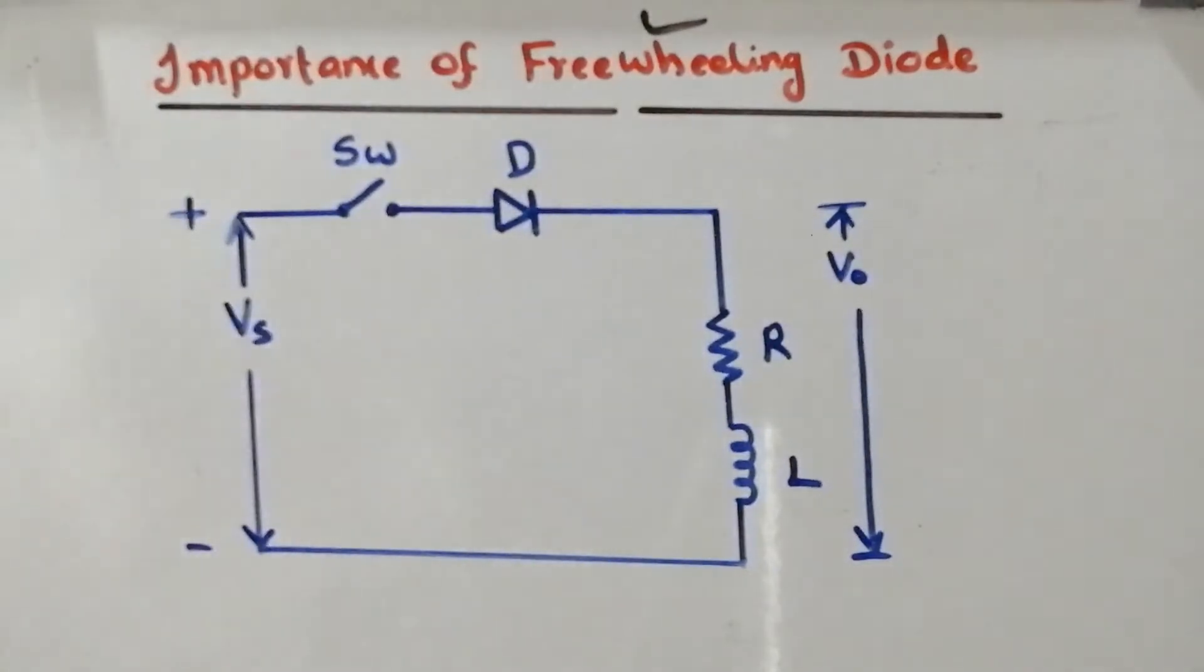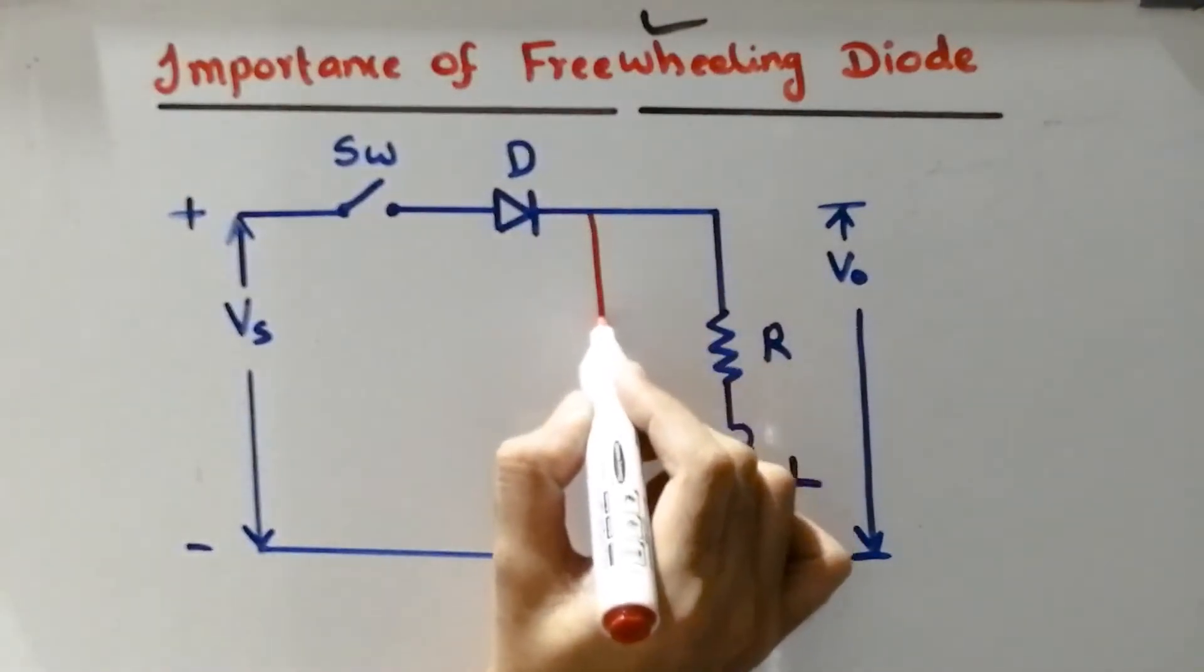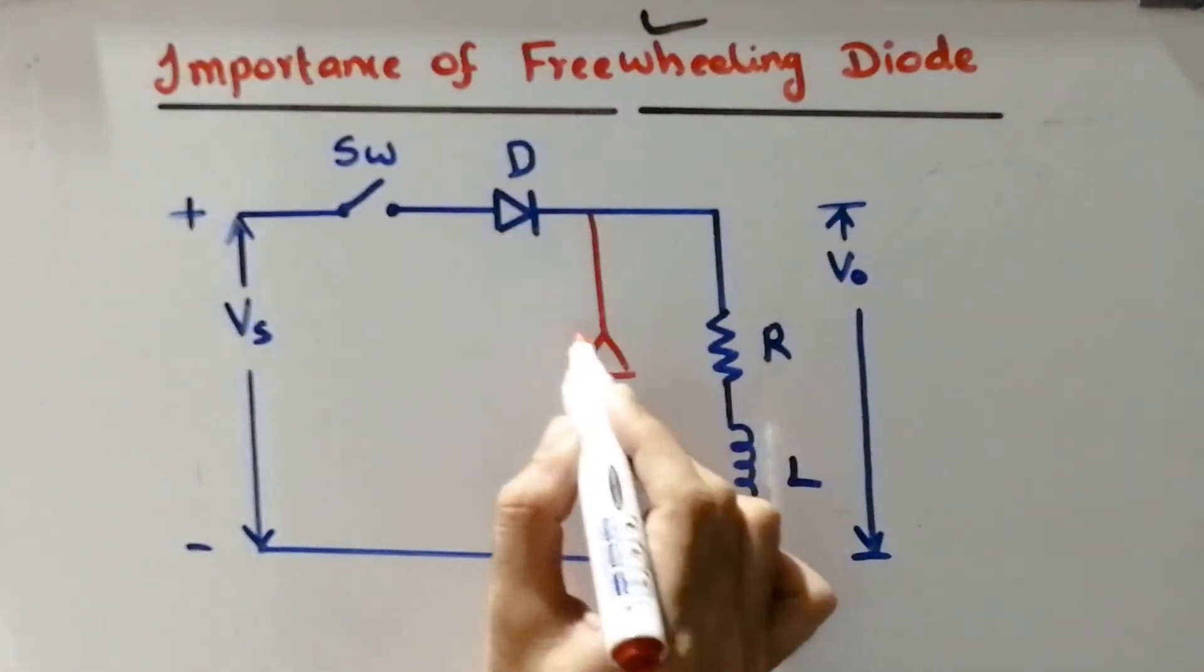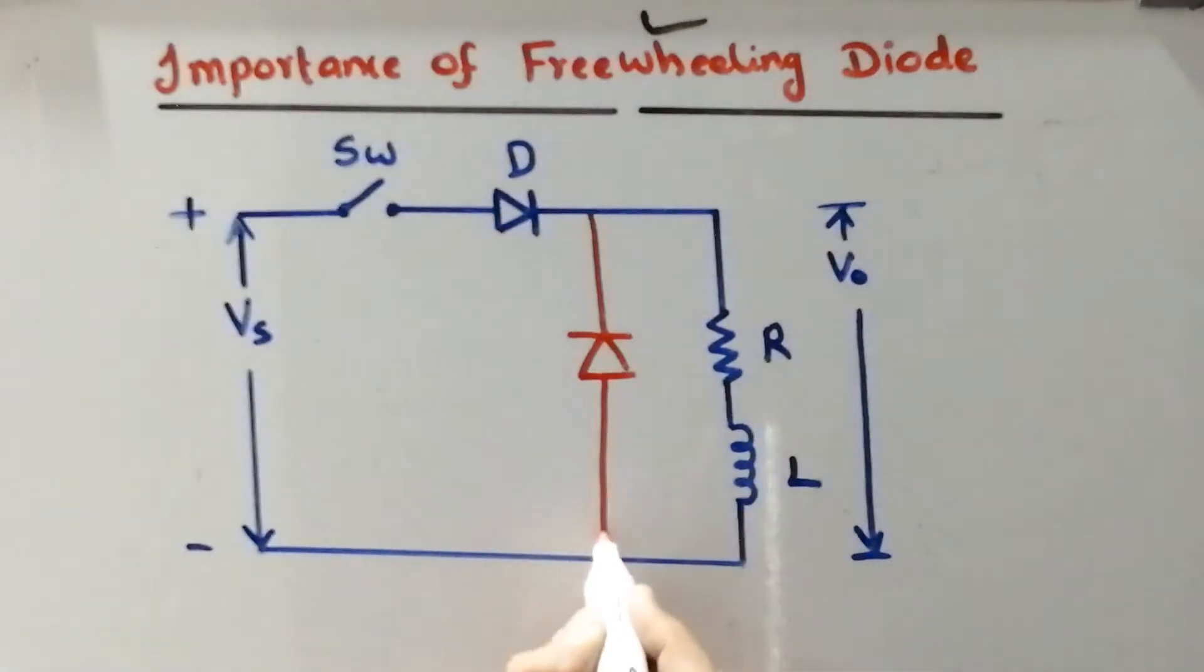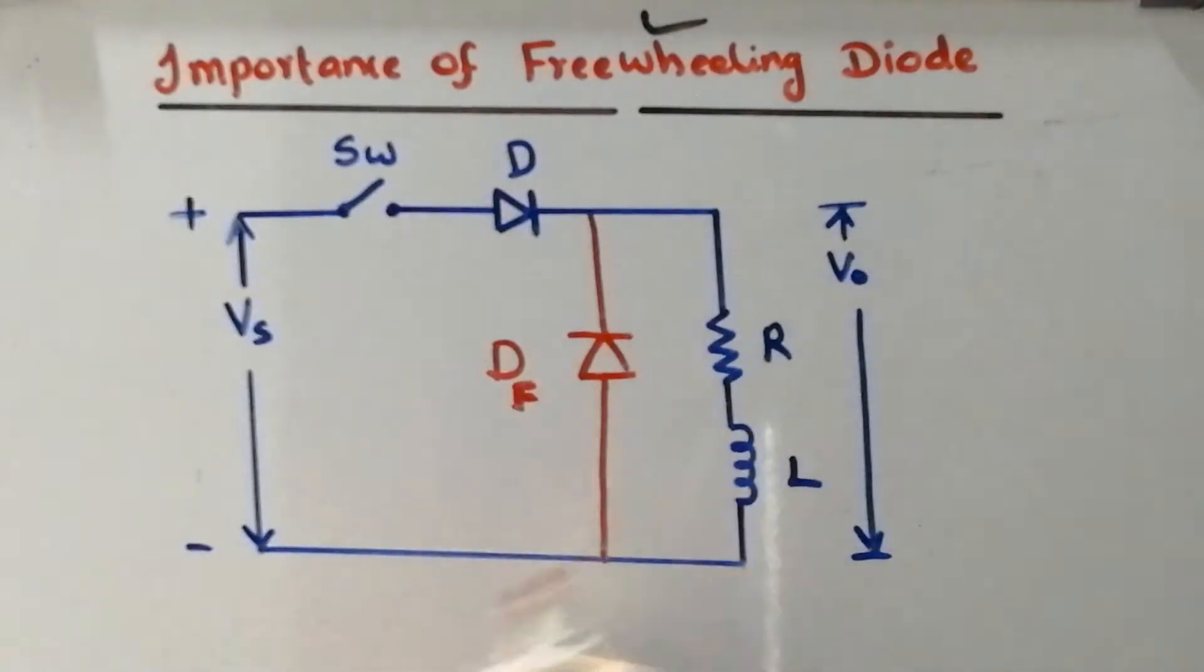What you are supposed to do is you need to connect a diode, a freewheeling diode parallel to the load. Let me call it as DF. DF stands for freewheeling diode.